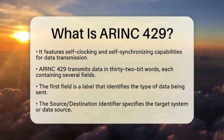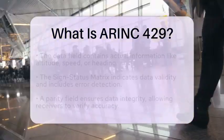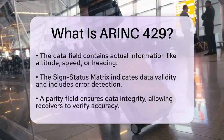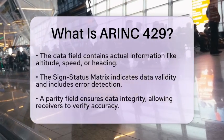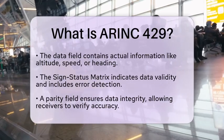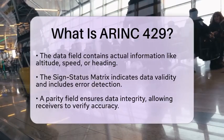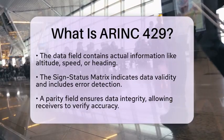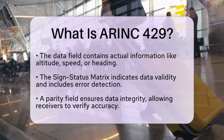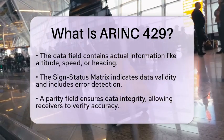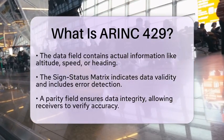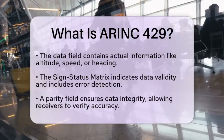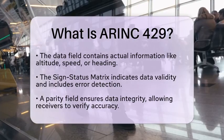Finally, there is a parity field that ensures data integrity, allowing receivers to verify the accuracy of the transmitted data. ARINC-429 supports two transmission speeds: 12.5 kilobits per second for low-speed applications, and 100 kilobits per second for high-speed applications. It uses differential signaling over twisted pair cables to minimize susceptibility to external noise and interference.